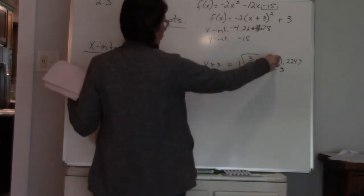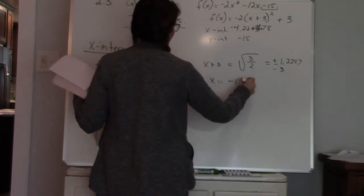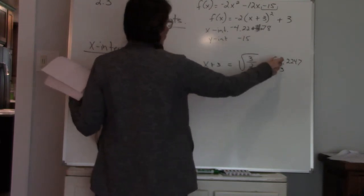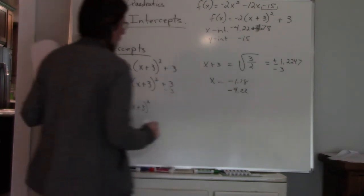So I have 1.2247 minus 3, which gives you negative 1.78. And then negative 1.2247 minus 3 gives you negative 4.2247.